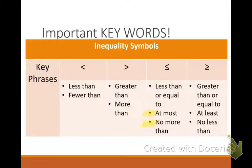Greater than or equal to — there are two key phrases you're going to need to be familiar with. If I said you have to be at least 16 years old to drive a car by yourself, what are some acceptable ages? 19, 25, 100. So 'at least' means that that is the lowest acceptable value. All the other acceptable values are more than that, or greater than or equal to. Same thing with 'no less than.'